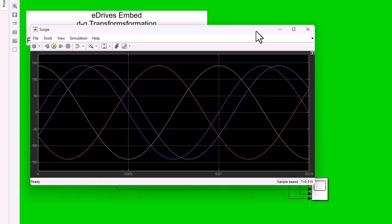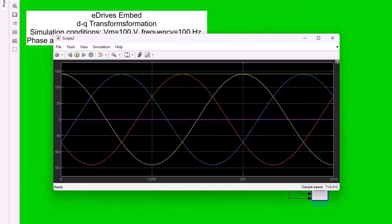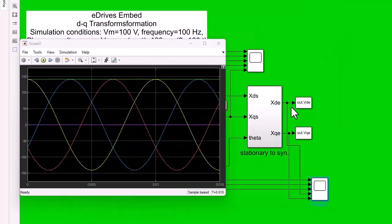And there are the simulation results. One notices that in the dq reference frame voltage variables, these signals are no longer sinusoidal signals; instead, they are DC signals.